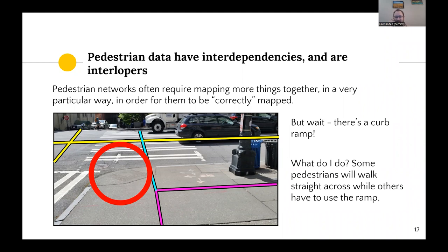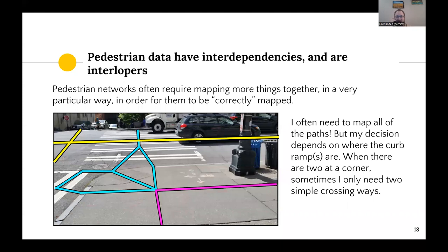But wait, it's more complicated — there's a curb ramp here. How do I map this kind of information for the pedestrian network? Some pedestrians will walk straight across the street, whereas others will need to use that curb ramp. So often what we need to do is map multiple paths that pedestrians will take. We have to imagine, as mappers, what a person might do in this case, less so than just mapping the infrastructure alone. I need to know where the curb ramps are in order to decide how I'm going to draw crossings. When there might be two curb ramps at a corridor perpendicular, I might need to draw only two crossings, but in this case I need to draw at least three distinct paths.